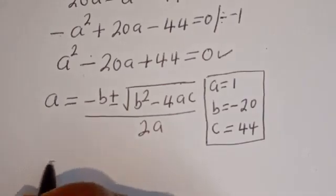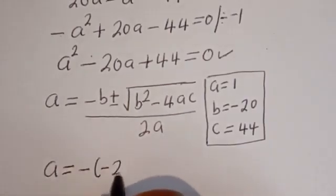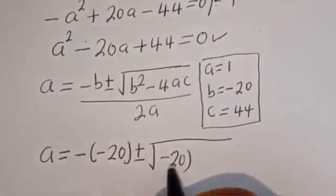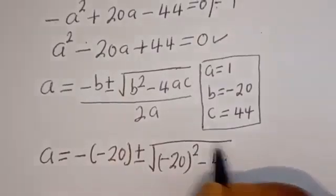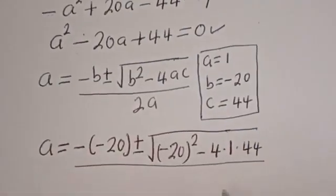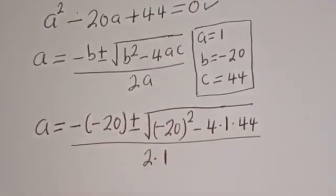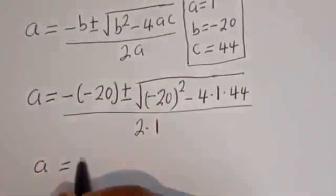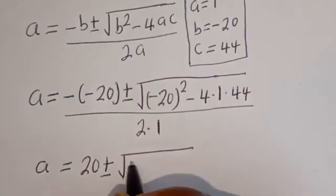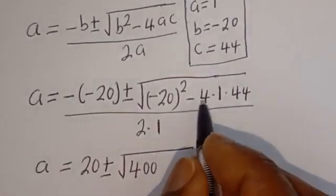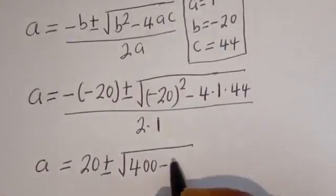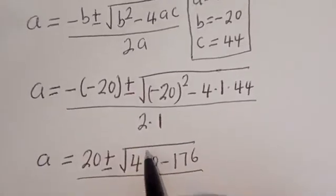Substituting: a equals negative bracket negative 20, plus or minus square root of negative 20 squared, minus 4 multiplied by 1 multiplied by 44, divided by 2 multiplied by 1. This gives a equals 20 plus or minus square root of 400 minus 176, divided by 2.